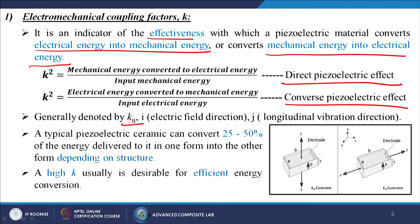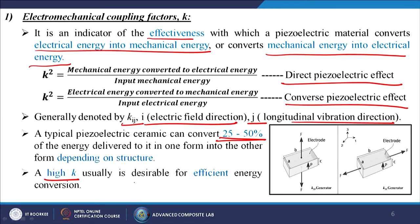It is generally denoted by k_ij, where i is the electric field direction and j is the longitudinal vibration direction. A typical piezoelectric ceramic can convert 25 to 50 percent of the energy delivered in one form into another, depending on the structure. So if you give 100 percent pressure input, up to 50 percent converts to electrical energy, or vice versa, depending on the material properties and crystal structure. A high k is desirable for efficient energy conversion.